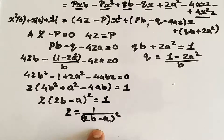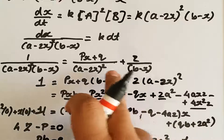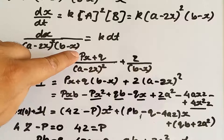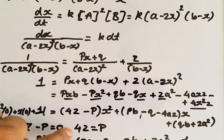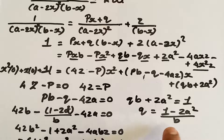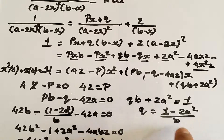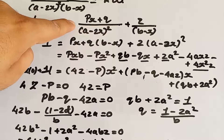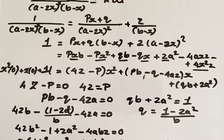We now have all three constants: z = 1/(2b − a)², p = 4z = 4/(2b − a)², and q = (1 − za²)/b = (1 − a²/(2b − a)²)/b, which simplifies to (4b² − 4ab)/(b(2b − a)²) = 4(b − a)·... These values of p, q, and z can now be substituted into the partial fraction expression, which is then integrated.